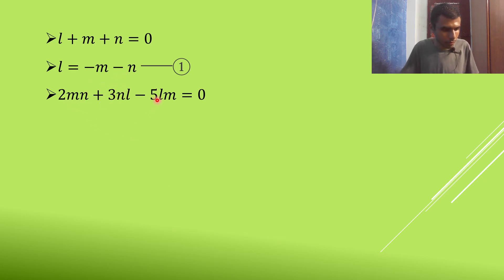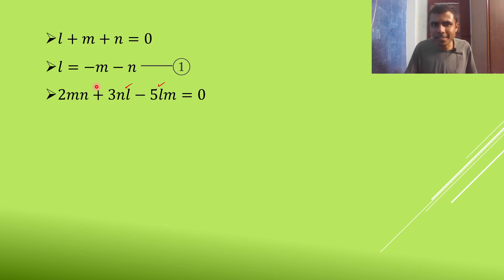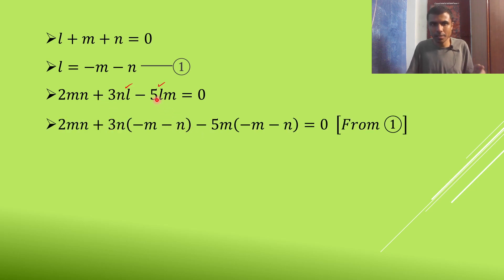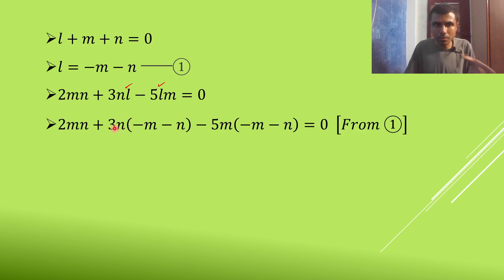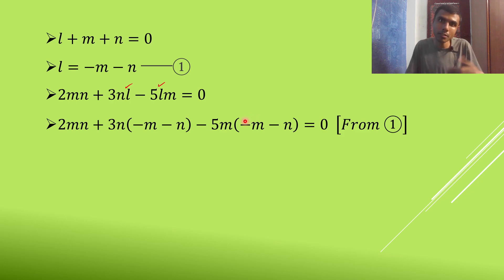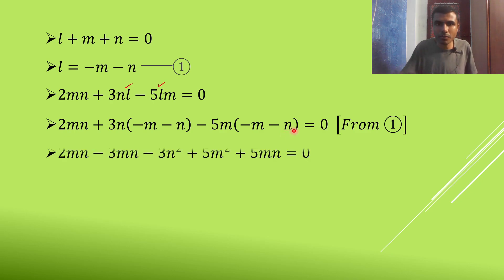Where do you see L in the second equation? You see it here and here. In place of L, just put −M − N. So: 2MN + 3N(−M − N) − 5M(−M − N) = 0. Expanding: 3N(−M) = −3MN, 3N(−N) = −3N²; and −5M(−M) = +5M², −5M(−N) = +5MN.